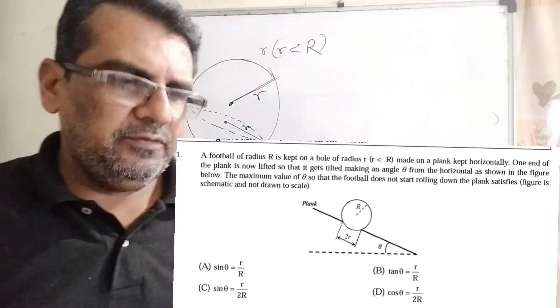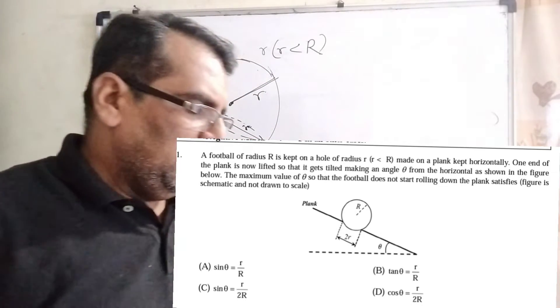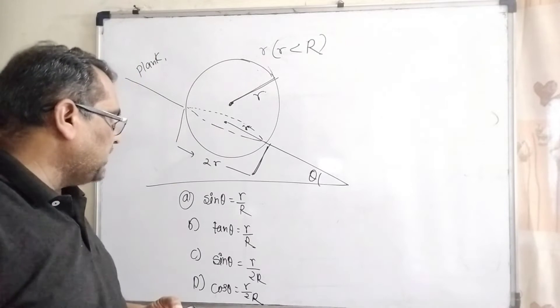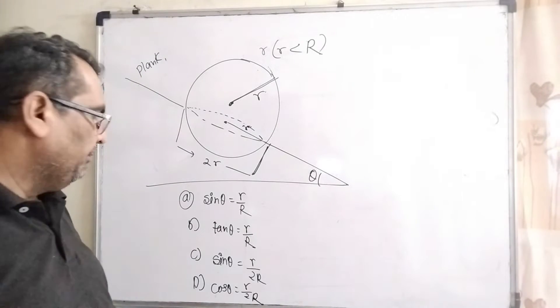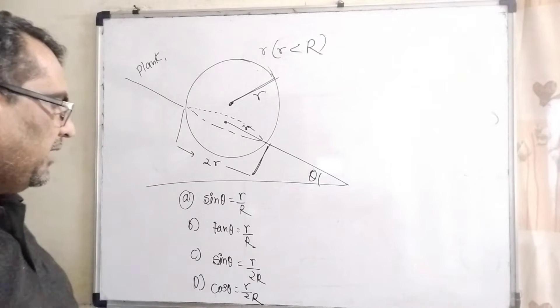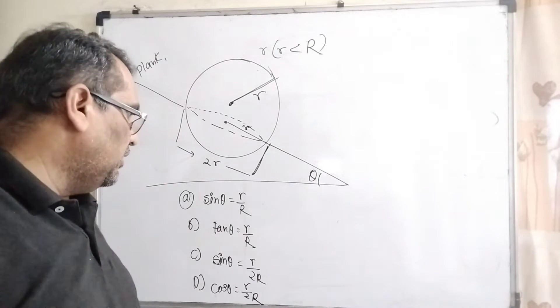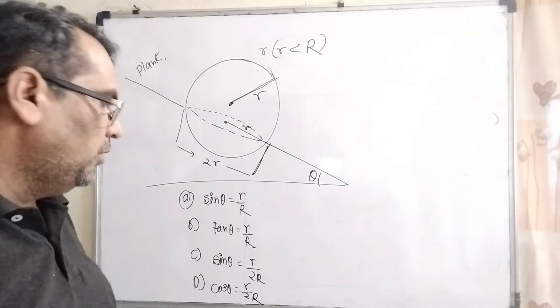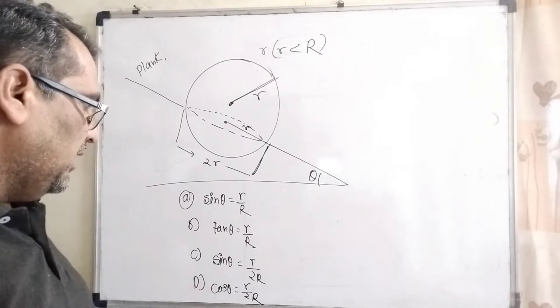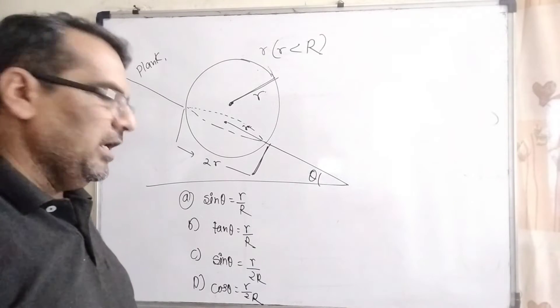You have given four options: sin theta equals r by R, tan theta equals r by R, sin theta equals r by 2R, and cos theta equals r by 2R.